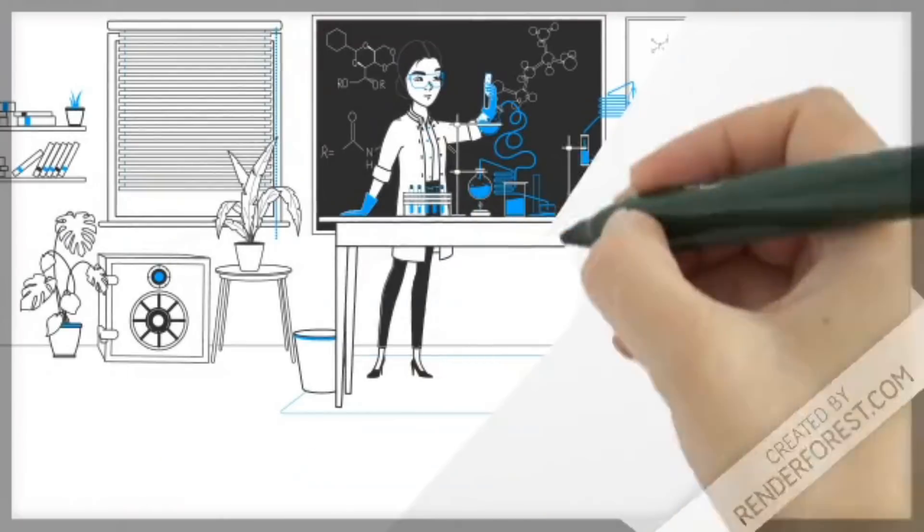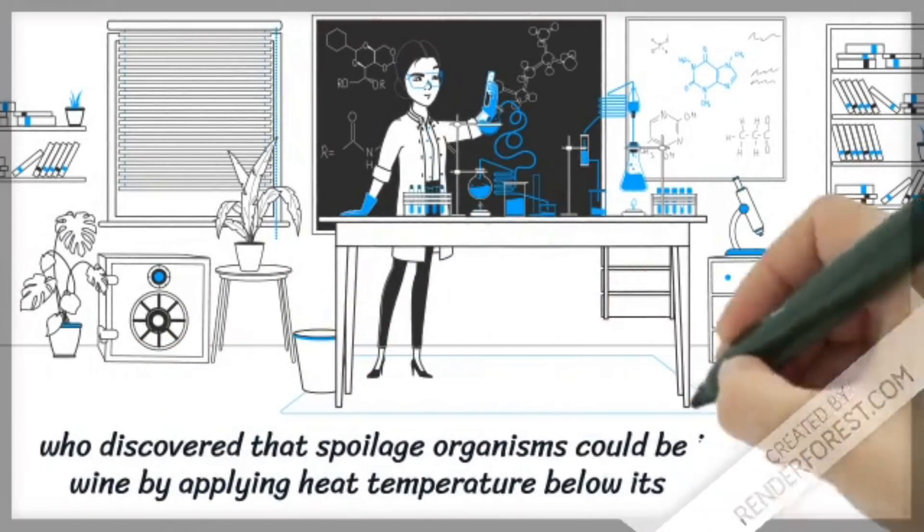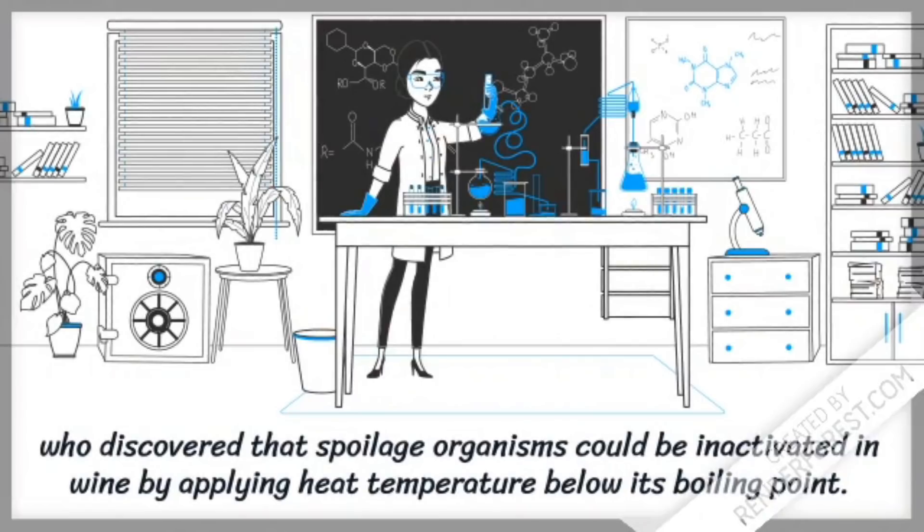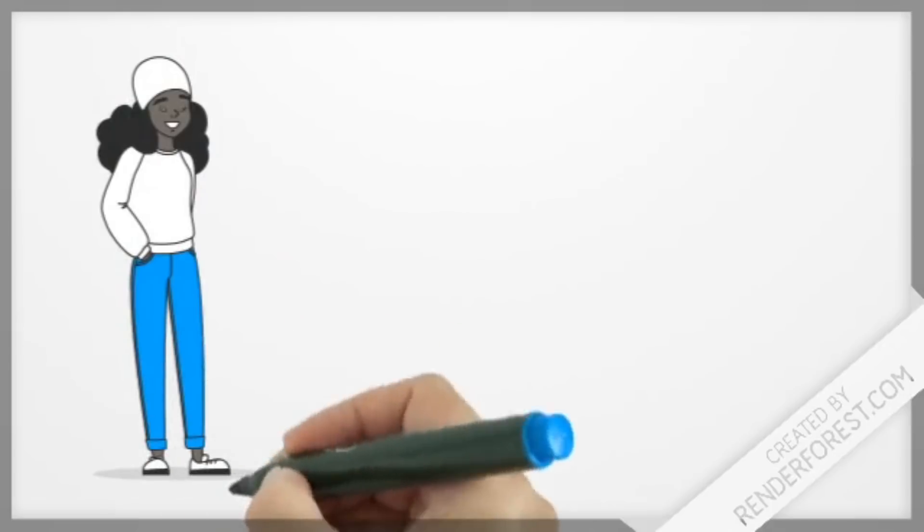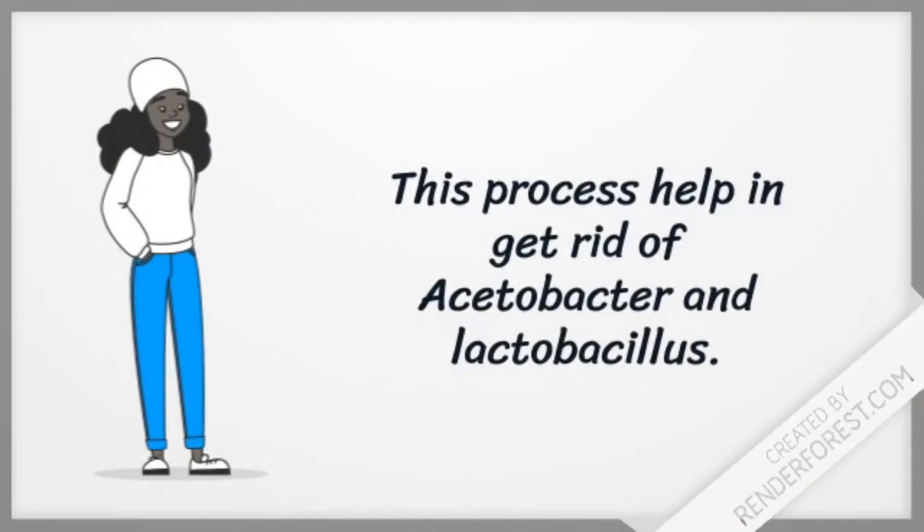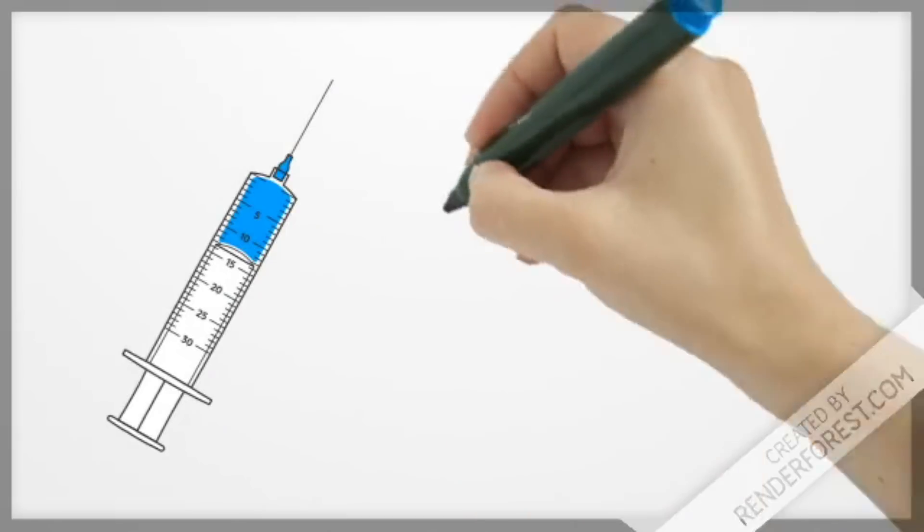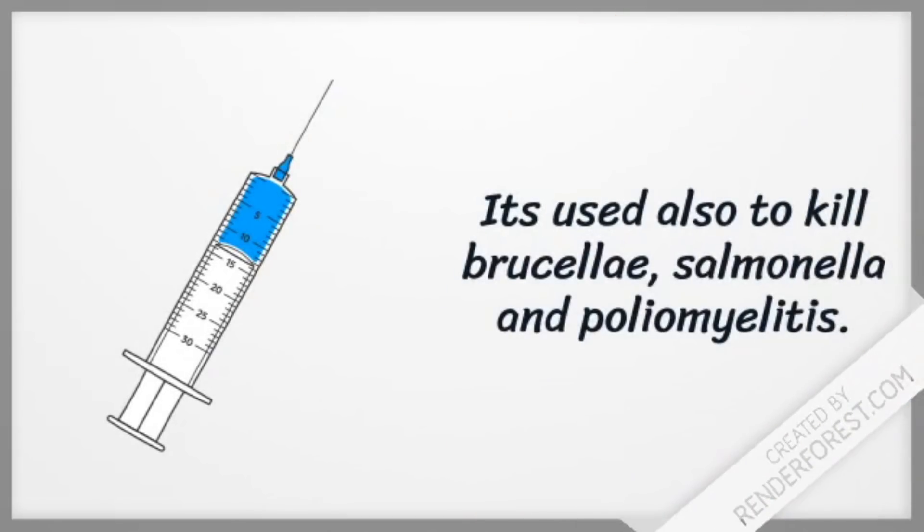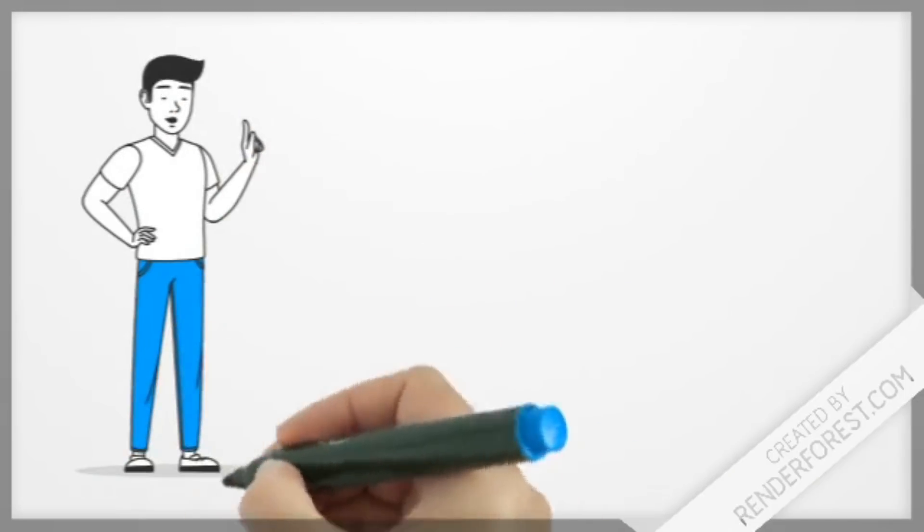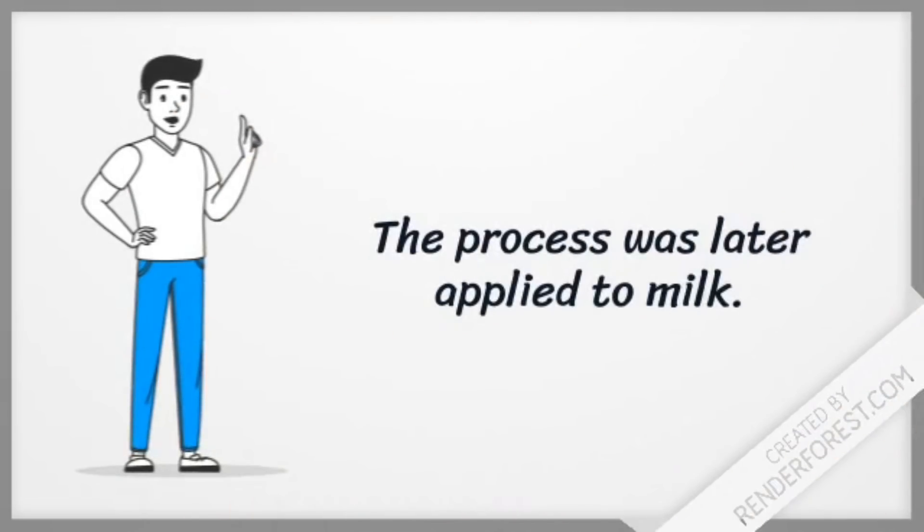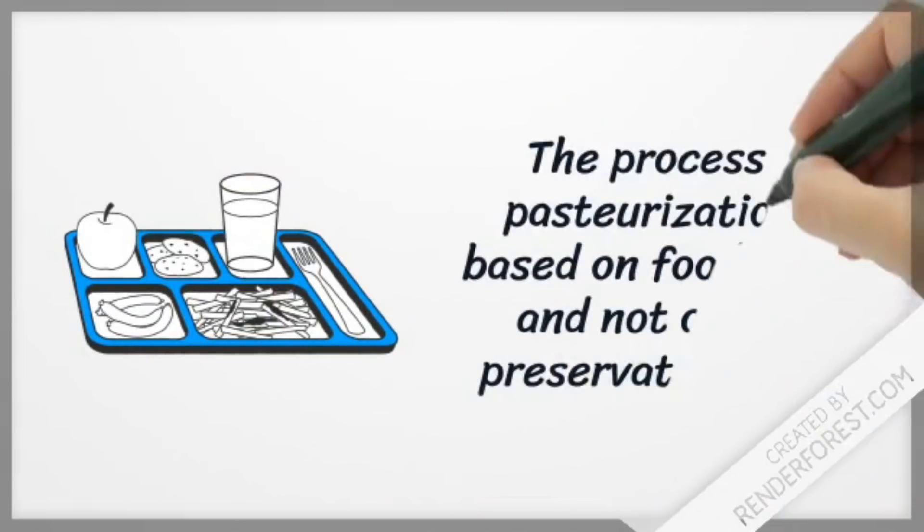He discovered that the deterioration of microbes is due to a suitable temperature that is used to preserve materials such as wine making. The process helps to get rid of Acetobacter and Lactobacillus bacteria. It is also used to get rid of Brucella, Salmonella and poliovirus. Later, this process was added to pasteurization of milk. The method of pasteurization is used for food safety.